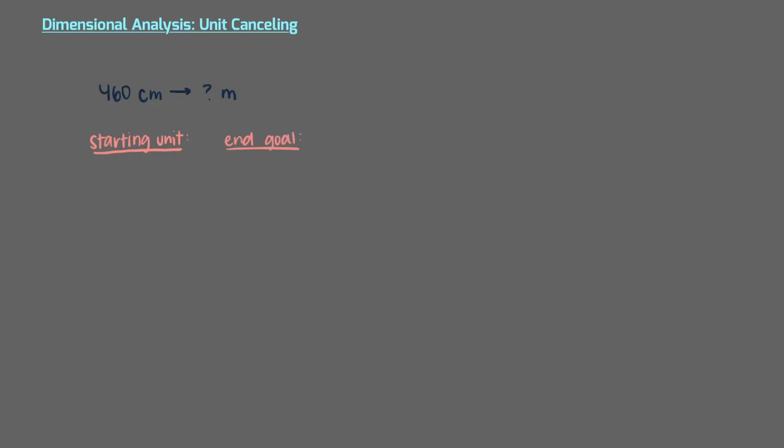Let's start by converting 460 centimeters to meters. Anytime that we convert from one unit to another, we need to keep in mind which unit we start with and what our end goal is. We are given a length in centimeters, which is what we'll start the problem with. We want to express this length in meters, which is the end goal we'll keep in mind. We'll need to set up a ratio and multiply 460 centimeters, our starting point, to get there.